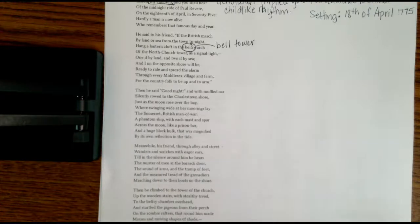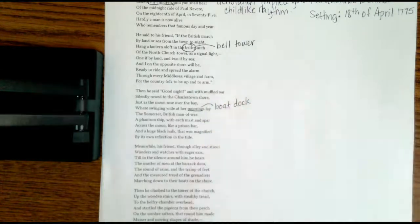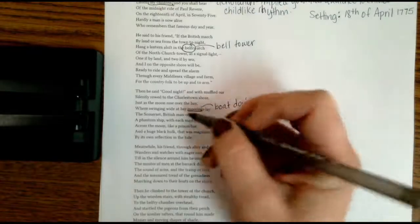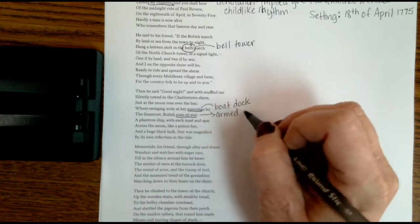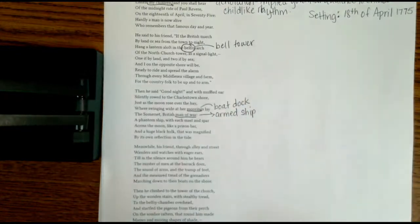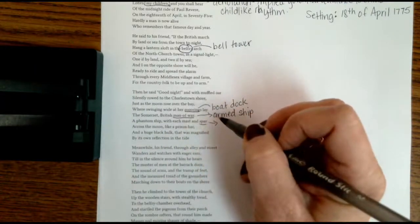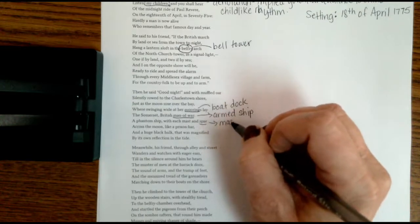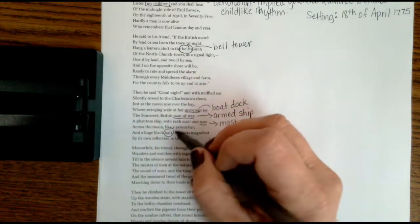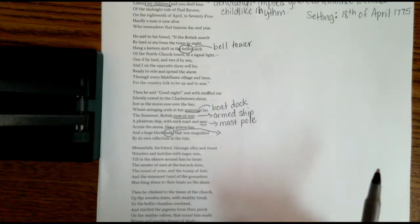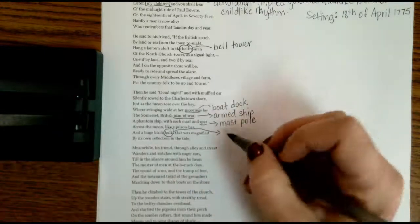So I want to point out a few things. Let's underline moorings. And mooring is a boat dock. Also want us to underline man of war. Man of war is an armed ship. So they're referring to the British ship. Also want us to underline spar. That's that large mast pole in the middle of the ship. So we're getting a good description of the British ship. And then let's circle hulk, because think about our superhero the Hulk. He's large right? So that's the same thing. There's a huge black hulk. So that means it was a large boat.